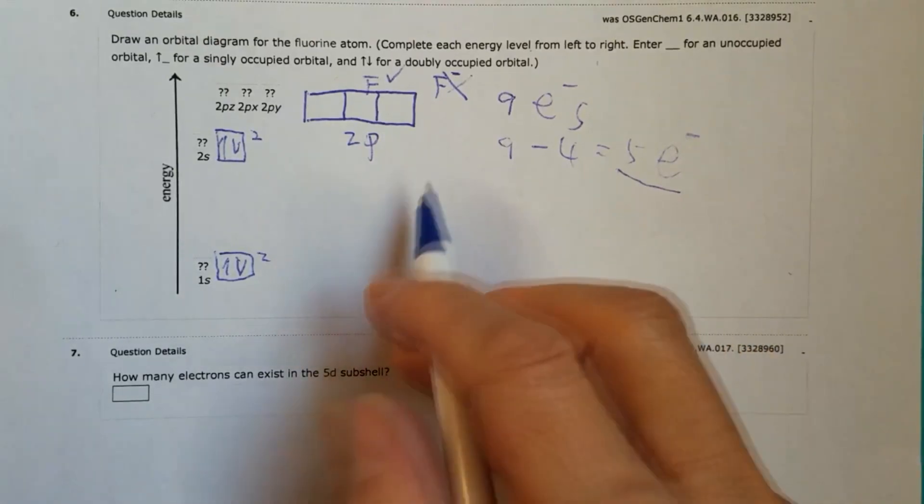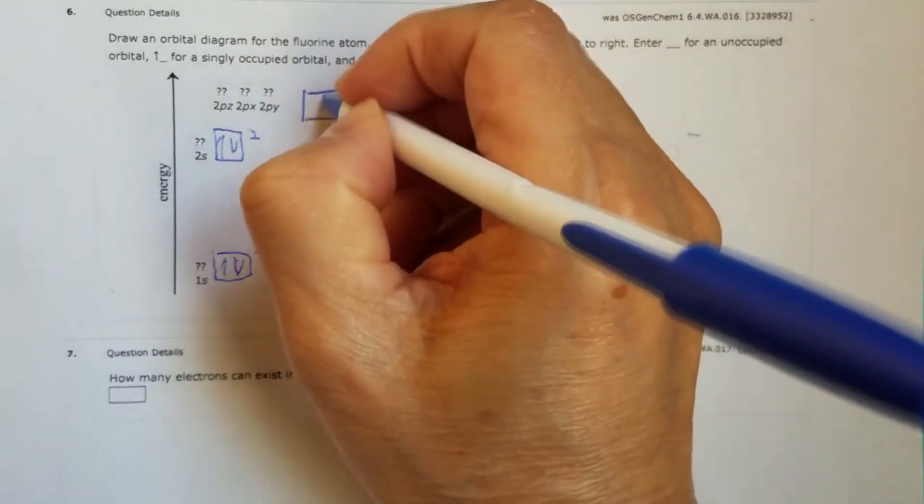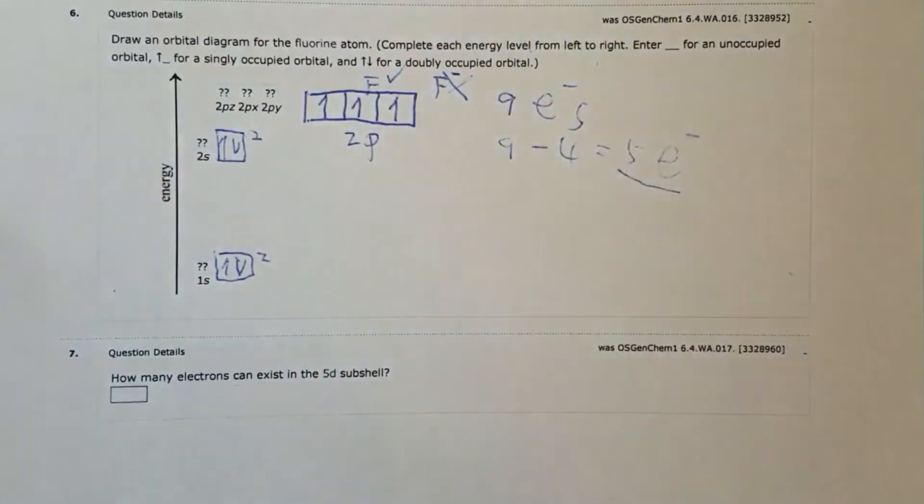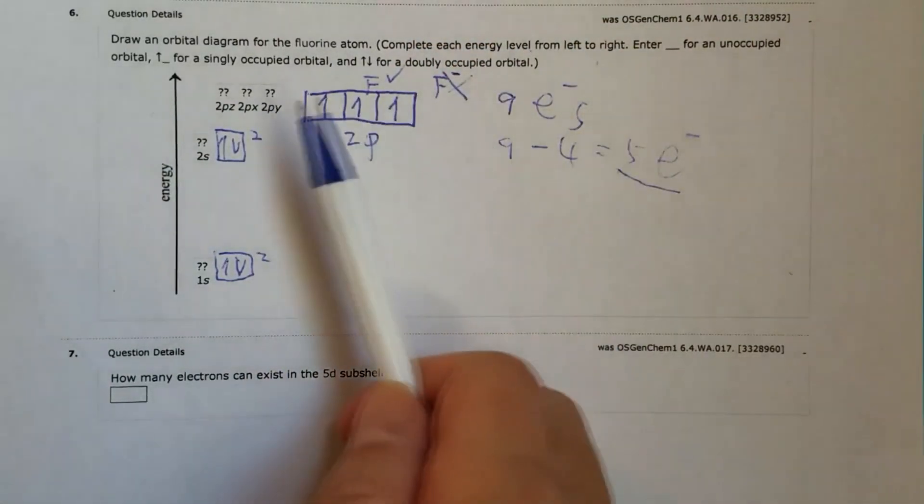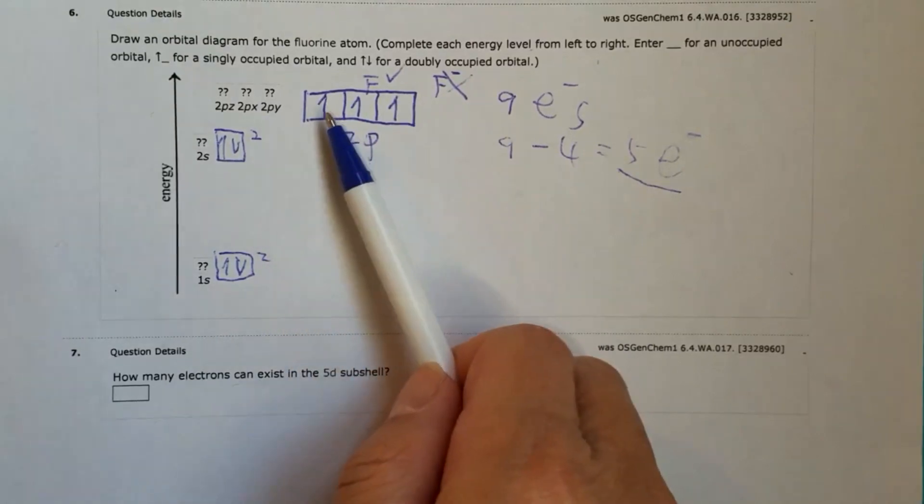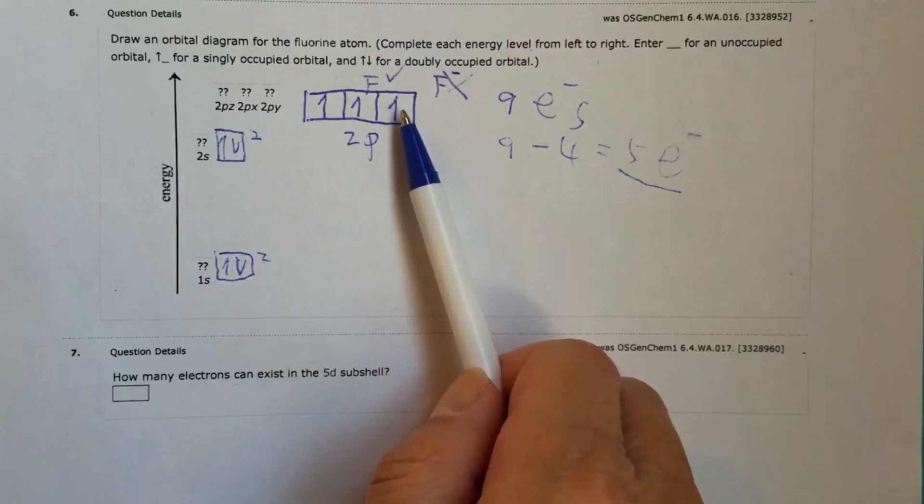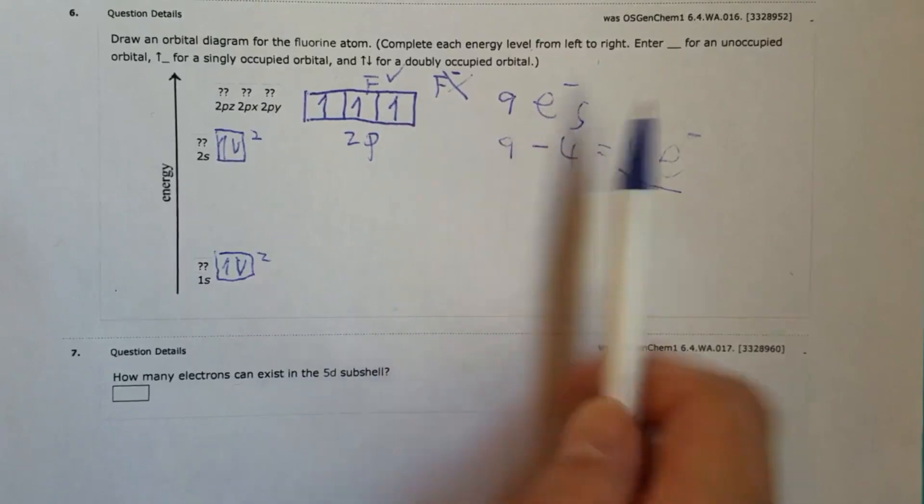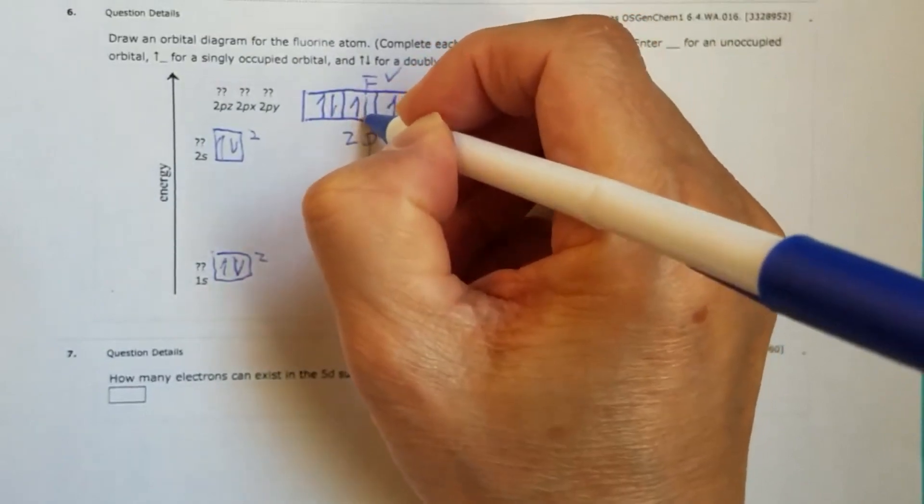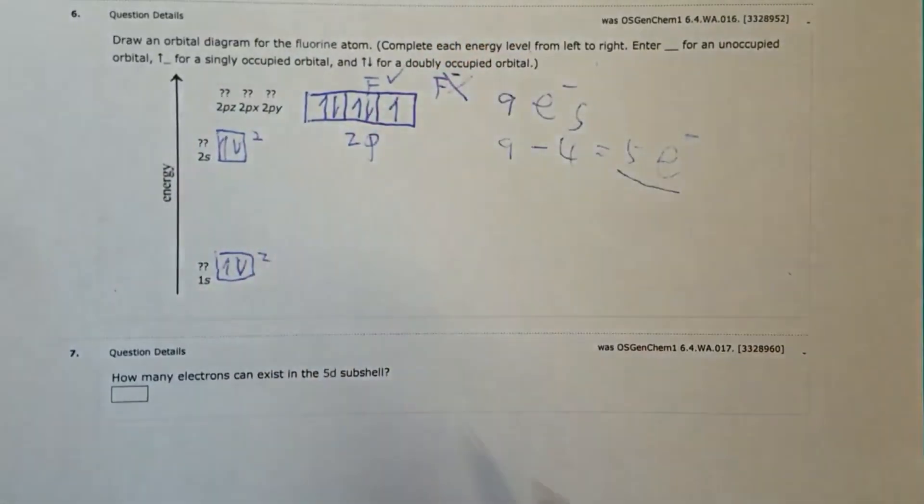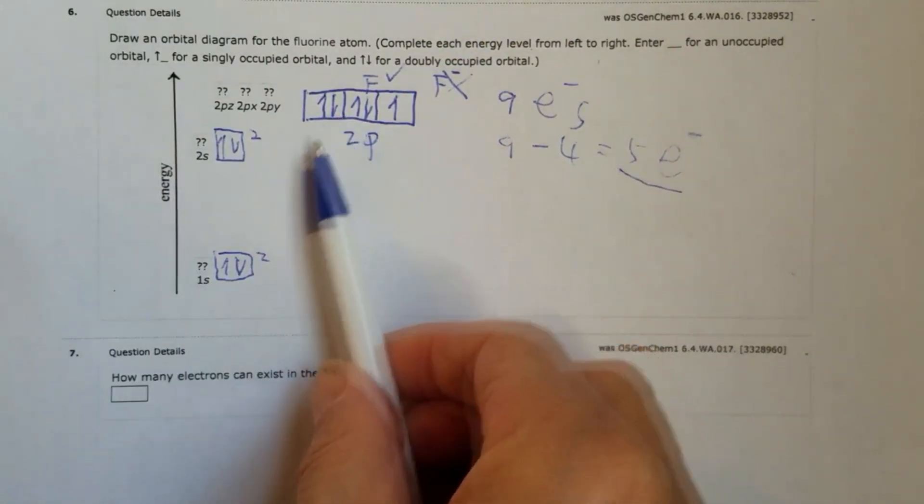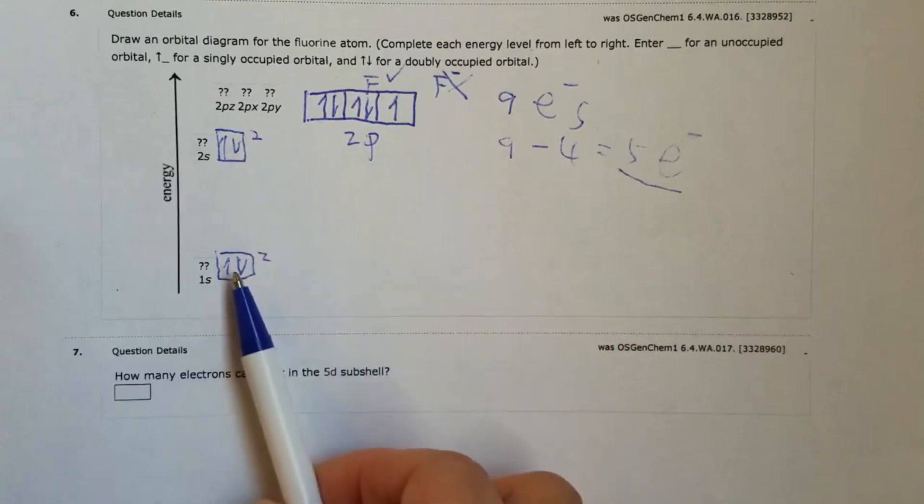According to Hund's rule, we need to place a single electron into each orbital with the same spin. So now we have four, two, four, five, six, seven. All right, and we have total of nine. The eighth one comes to here. Again, this is just Hund's rule. Okay, pairing them. If you have two electrons, they have to have one opposite spin, just like here or anywhere.